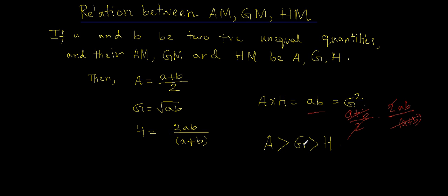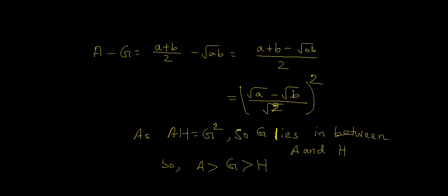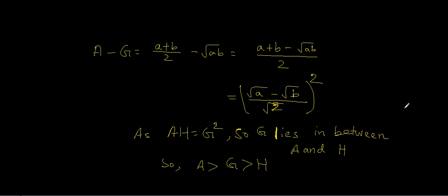Also arithmetic mean greater than geometric mean greater than harmonic mean. So let's see how we get this. If we subtract arithmetic mean from geometric mean we get this result which is positive if A and B are positive.